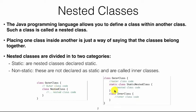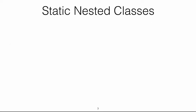There are two types of nested classes. If you declare the nested class as static, it is referred to as a static nested class. If you don't declare it as static, it is referred to as an inner class. Let's look at static nested classes first, and then we'll look at inner classes.